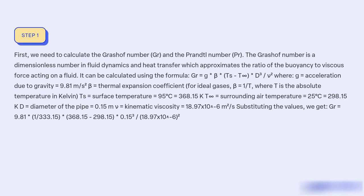β = 1/T, where T is the absolute temperature in Kelvin. Ts = surface temperature = 95°C = 368.15 K, T∞ = surrounding air temperature = 25°C = 298.15 K.